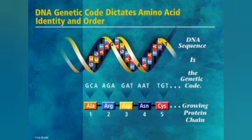DNA genetic code dictates amino acid identity and order. As you can see, the DNA sequence shown is: GCA, AGA, GAT, AAT, TGT. These are the genetic codes that form the growing protein chain.